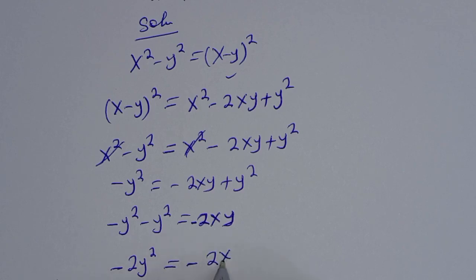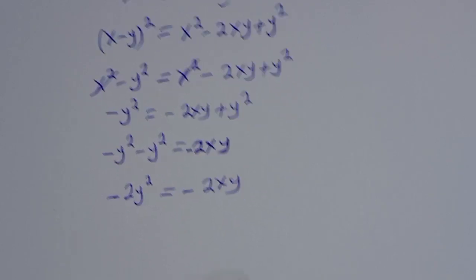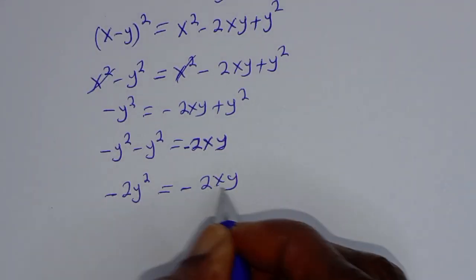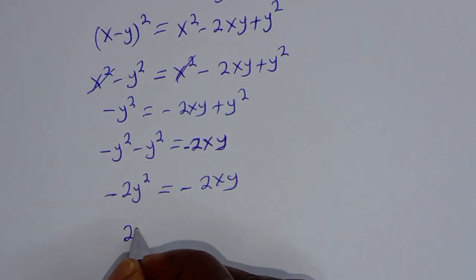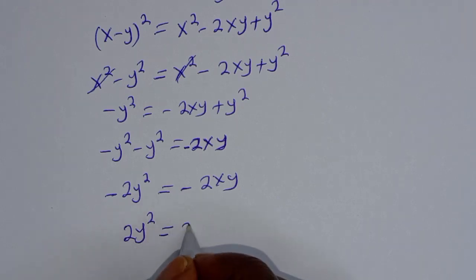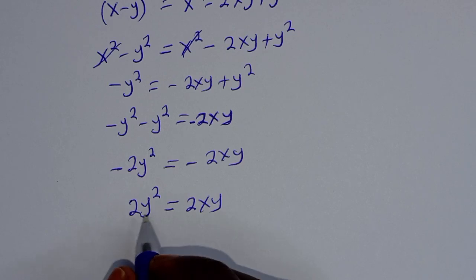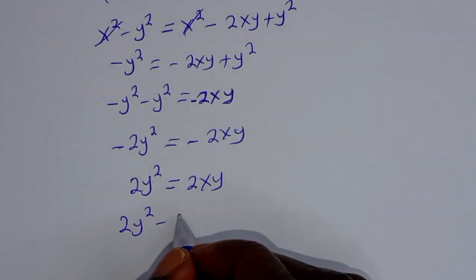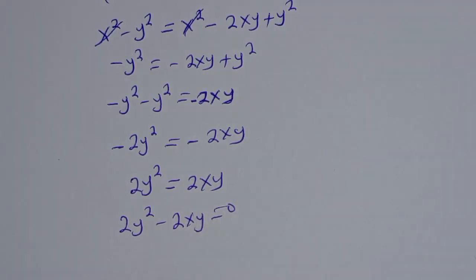Then if you multiply by minus 1, we have 2y squared is equal to 2xy. So this is 2y squared minus 2xy is equal to 0.